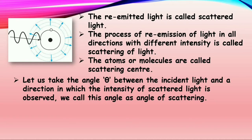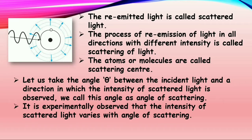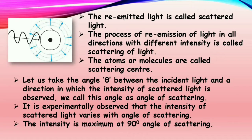Let us take the angle theta between the incident light and direction in which the intensity of scattered light is observed. We call this angle as angle of scattering. It is experimentally observed that the intensity of scattered light varies with the angle of scattering. The intensity is maximum at 90 degrees angle of scattering.